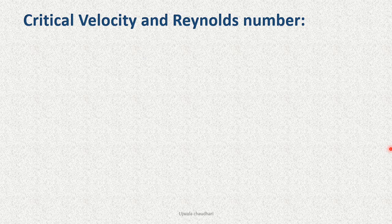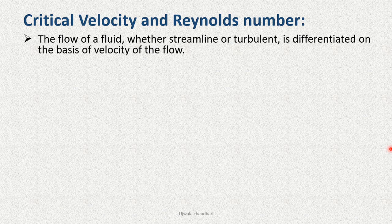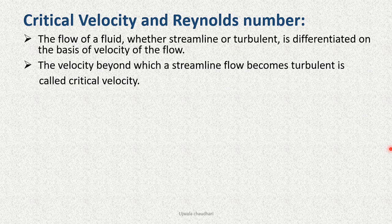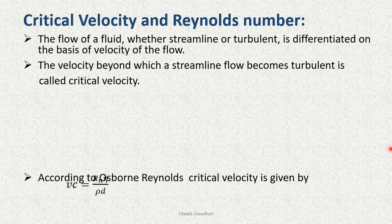Critical velocity of flow: Critical velocity and Reynolds number. The flow of a fluid, whether streamlined or turbulent, is differentiated on the basis of velocity of flow. The velocity beyond which a streamlined flow becomes turbulent is called critical velocity.